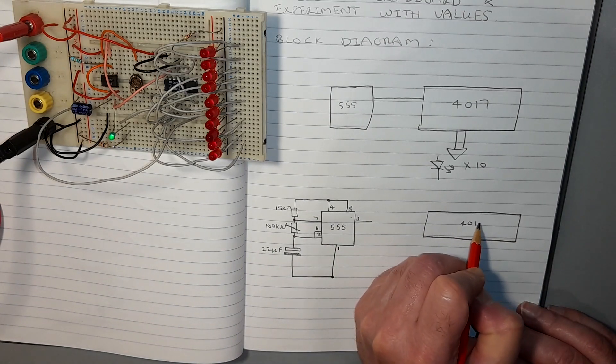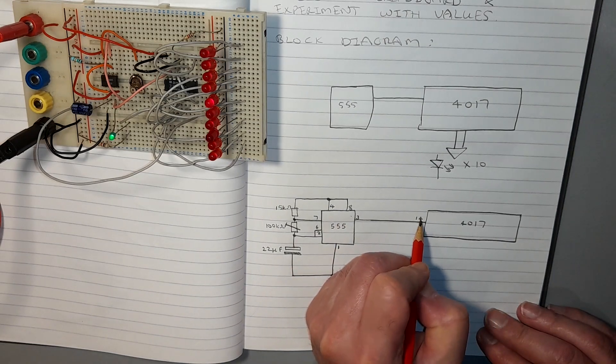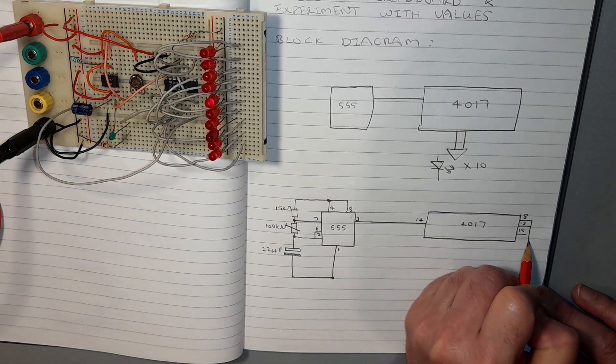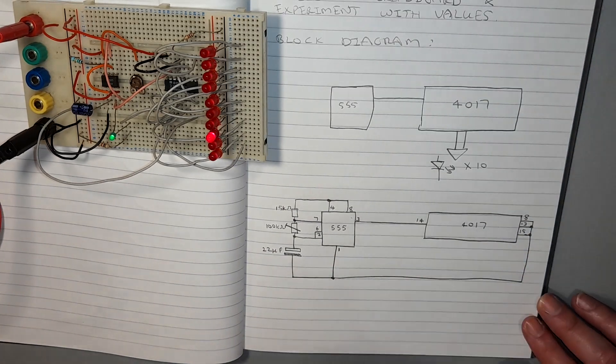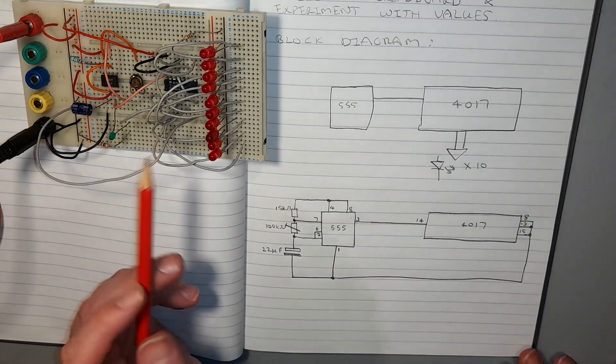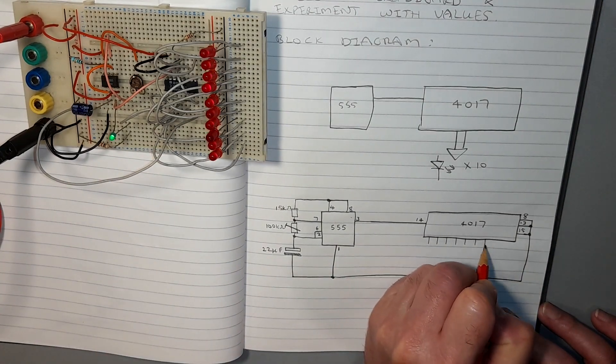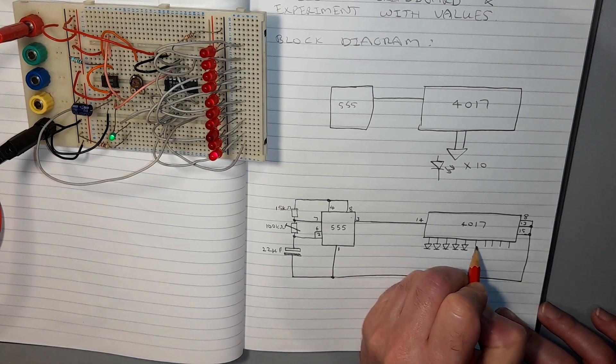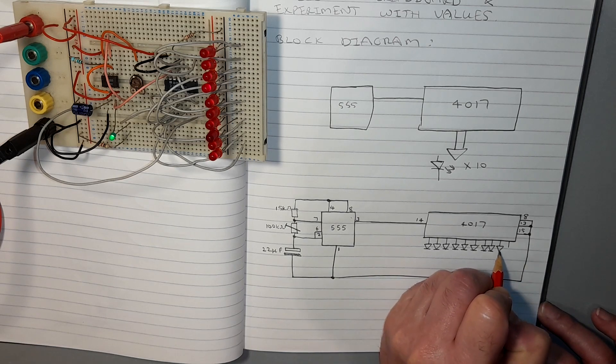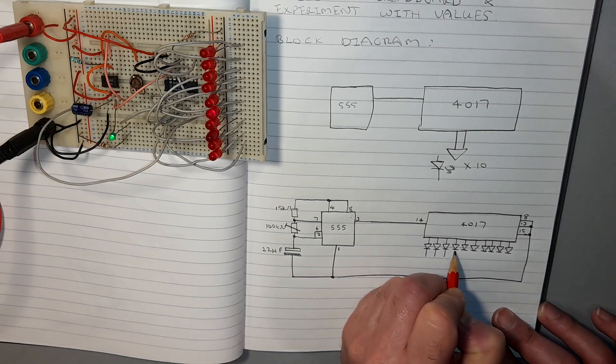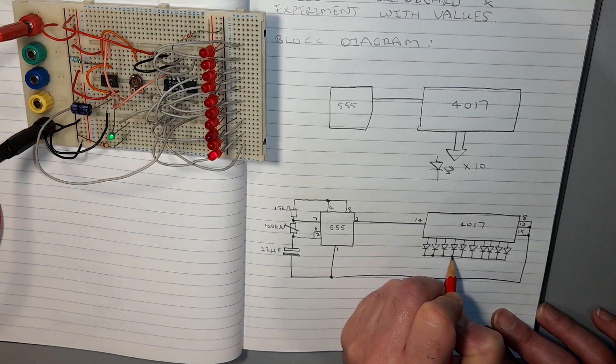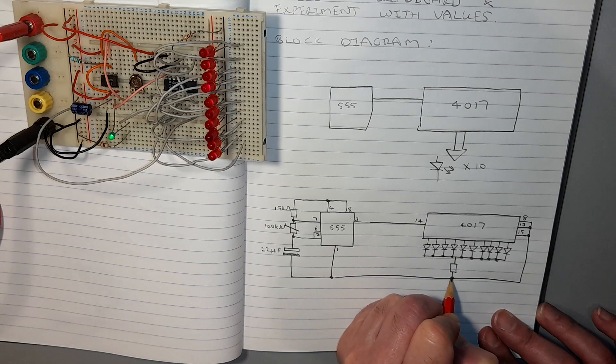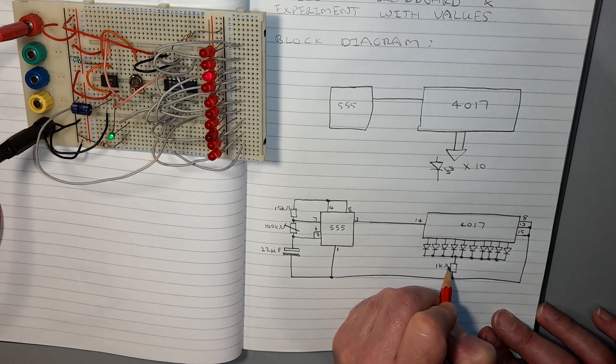Three pins from the 4017 connect to negative: pins 8, 13, and 15. The 10 LED outputs come from, in order, pins 3, 2, 4, 7, 10, 1, 5, 6, 9, and 11. These connect to the anodes of the 10 LEDs. The LED's cathodes are all connected together and connect to a 1 kilo ohm resistor which then connects to negative.